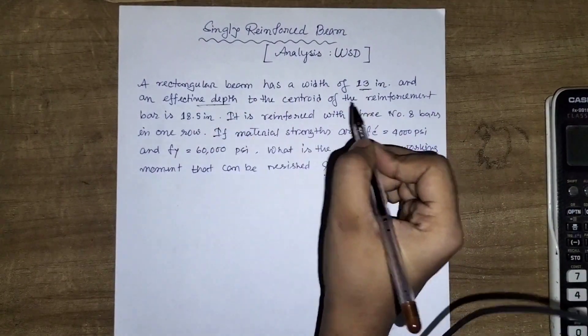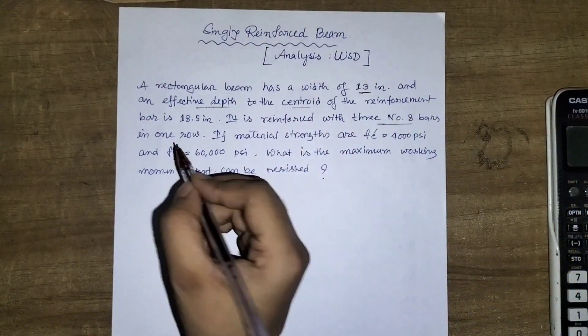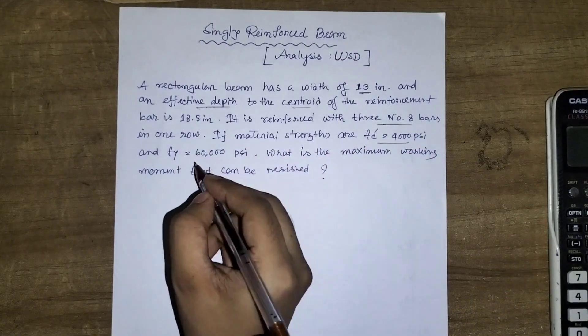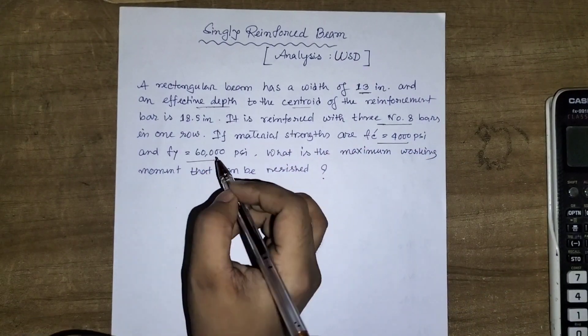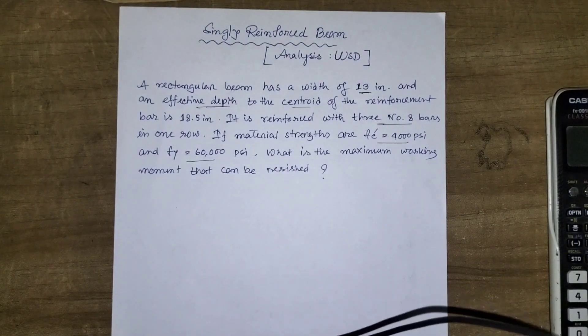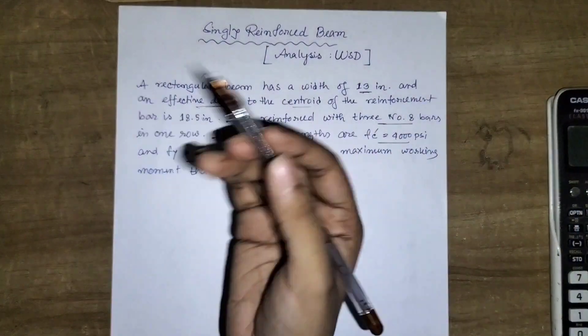So we have a rectangular beam with the given width, effective depth, and centroid location. There are three number 8 bars in one row, f'c prime is 4000 psi and fy, the steel strength, is 60,000 psi. Let's start with the WSD analysis and find the maximum moment.